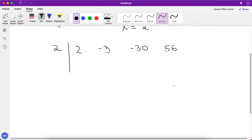So the first step is to move this 2 down, so you will get a 2 here. Now you multiply this 2 with this, so you get 4. -3 + 4 is 1. 1 × 2 is 2. So -30 + 2 is -28. So you get -56 and 56 - 56 is 0.